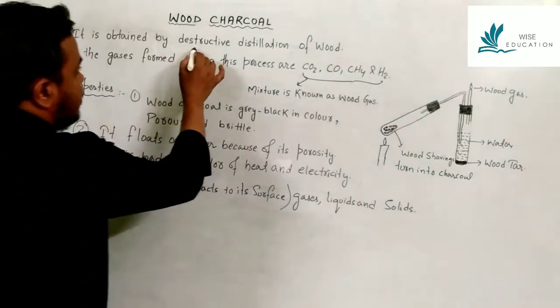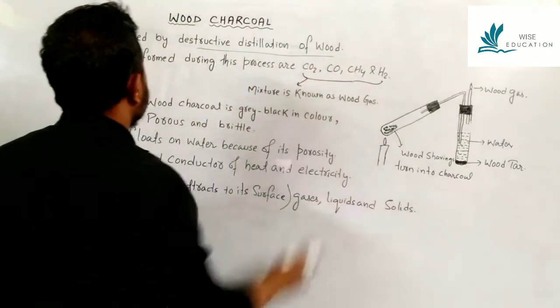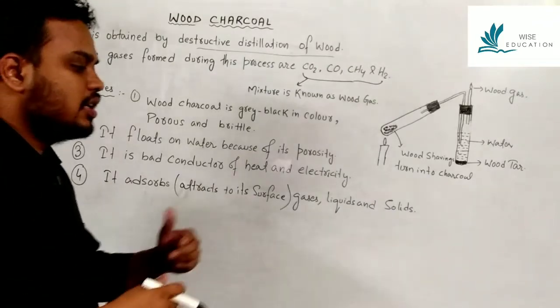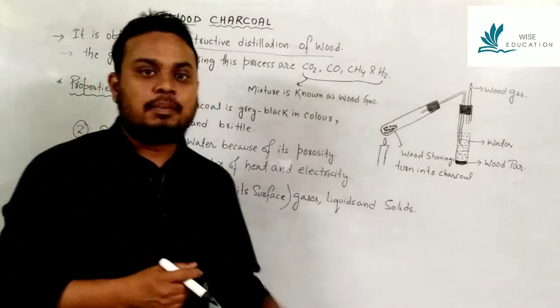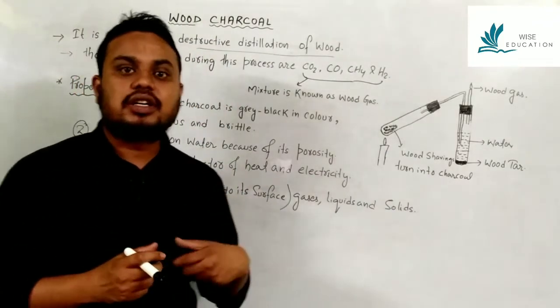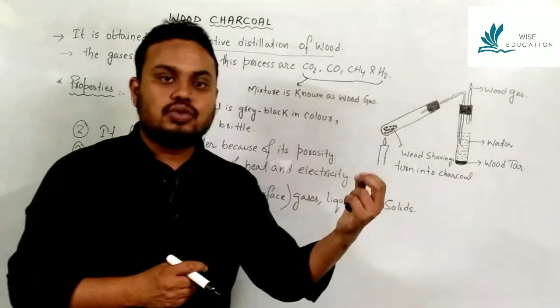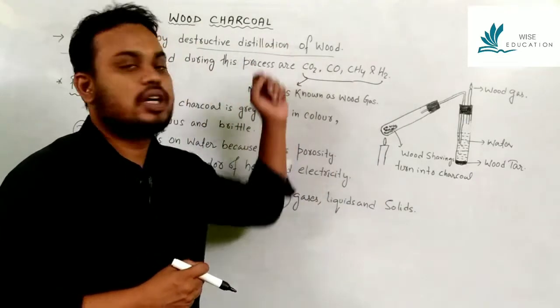Wood charcoal is obtained by the destructive distillation of wood. Through this destructive distillation process, we get wood charcoal.